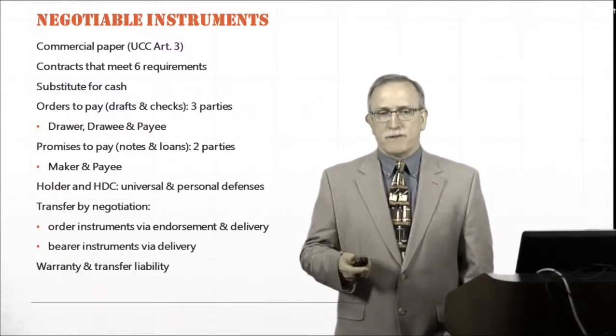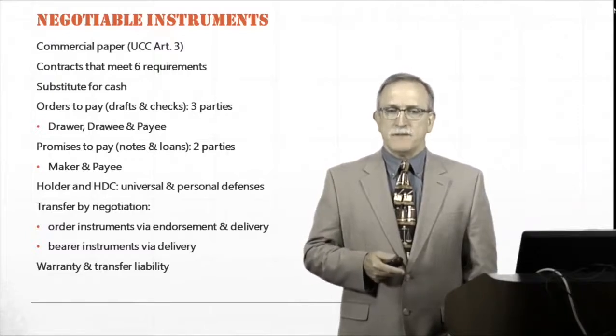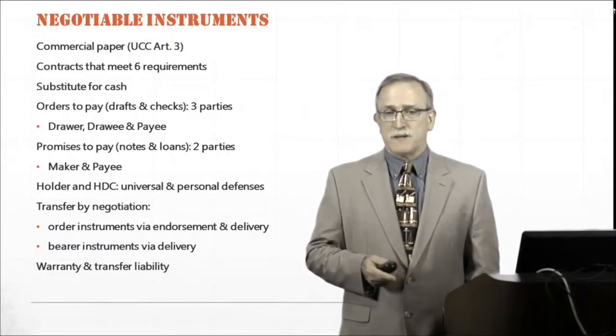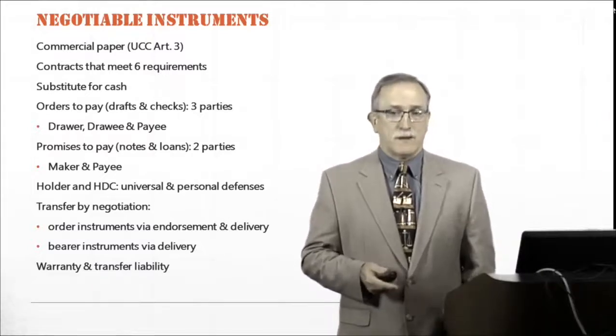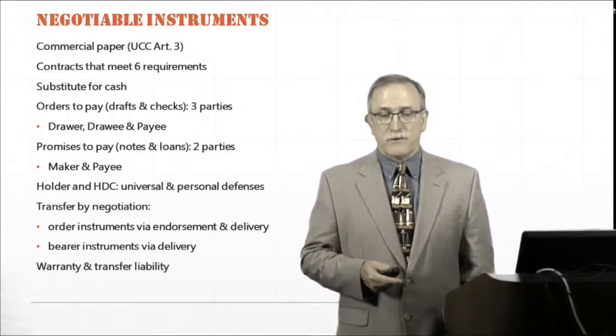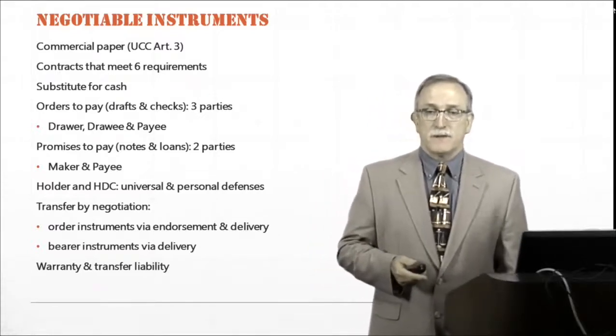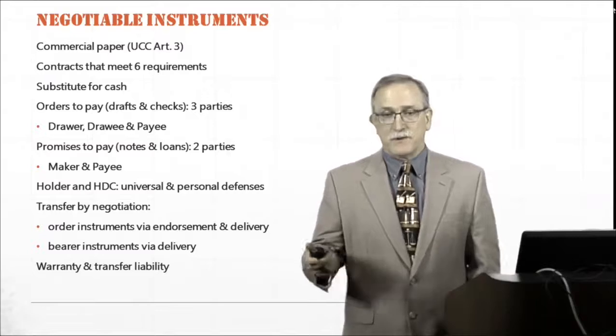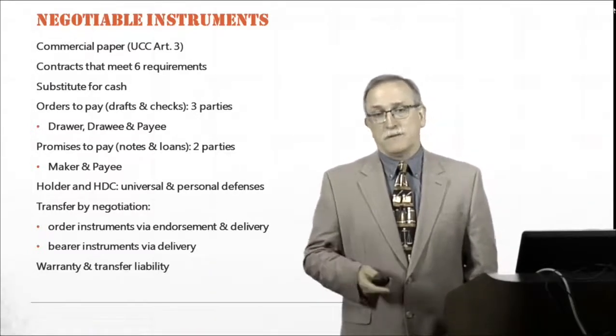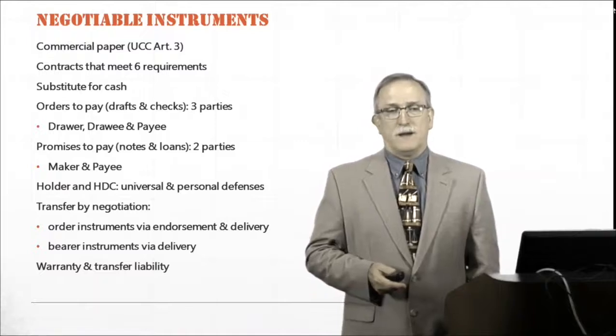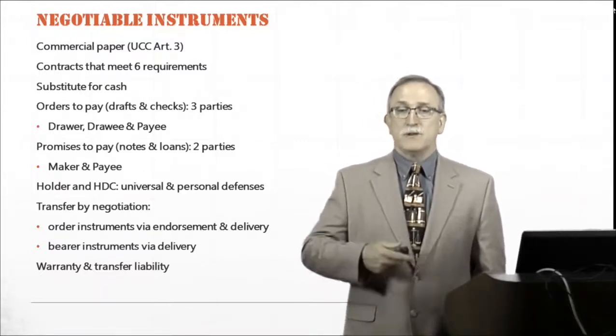You have three-party instruments and two-party instruments. Important to understand the names of these parties because they have different liabilities. Obviously, if you're a maker on your student loan or your home loan, you're primarily liable. If you have a cosigner, that cosigner, depending if it's a surety or a guarantor, which we'll discuss later on, they are also liable for it.